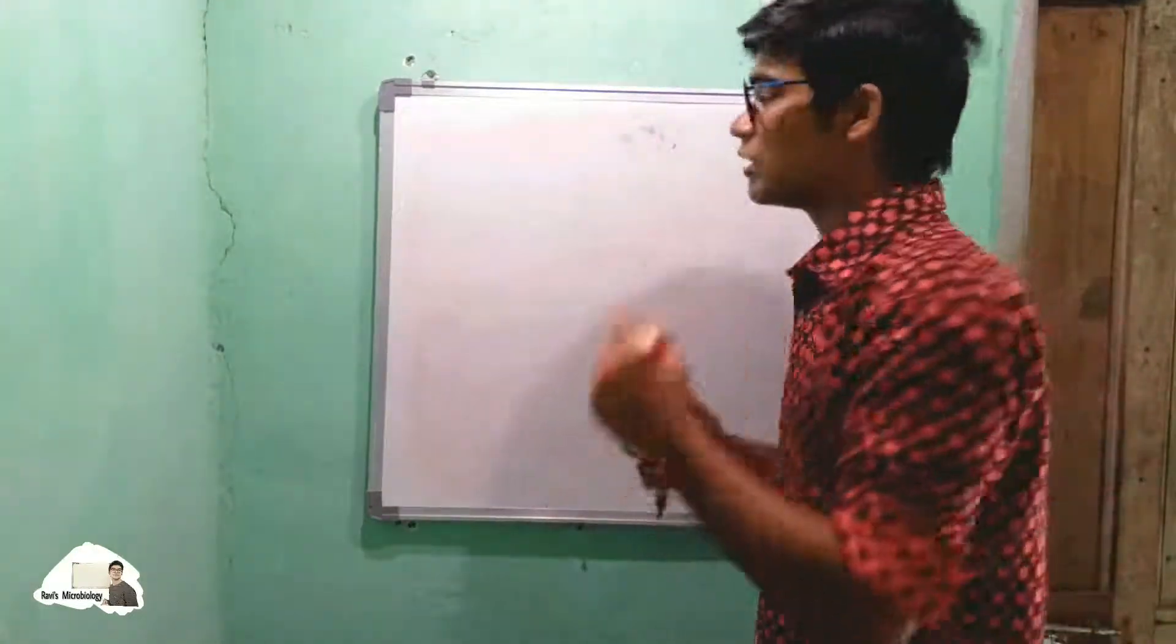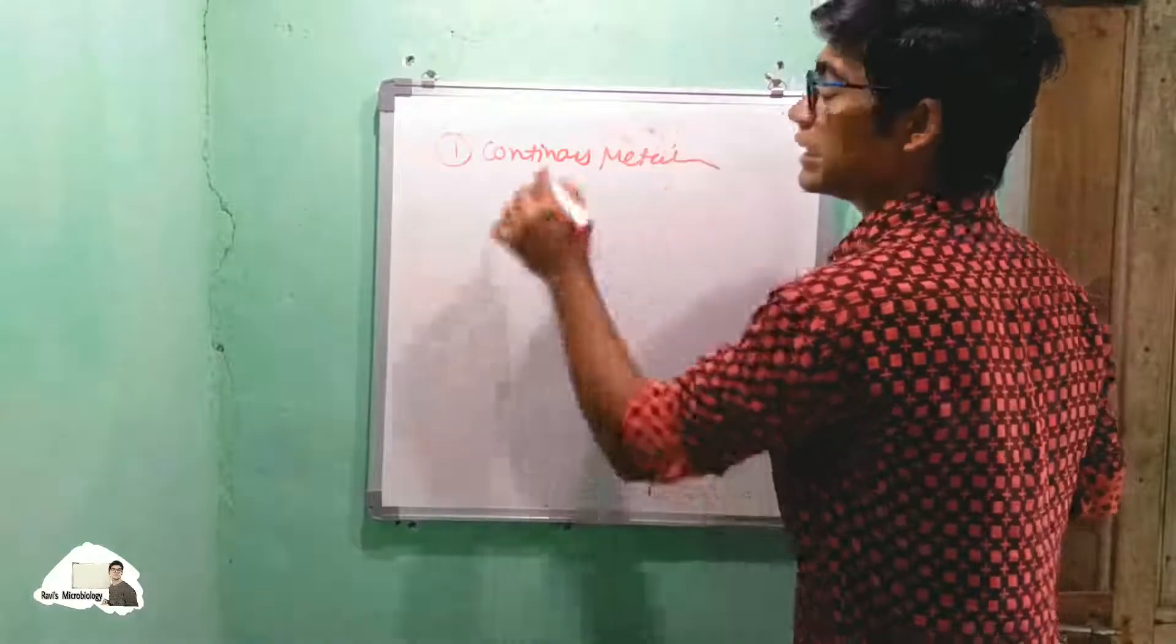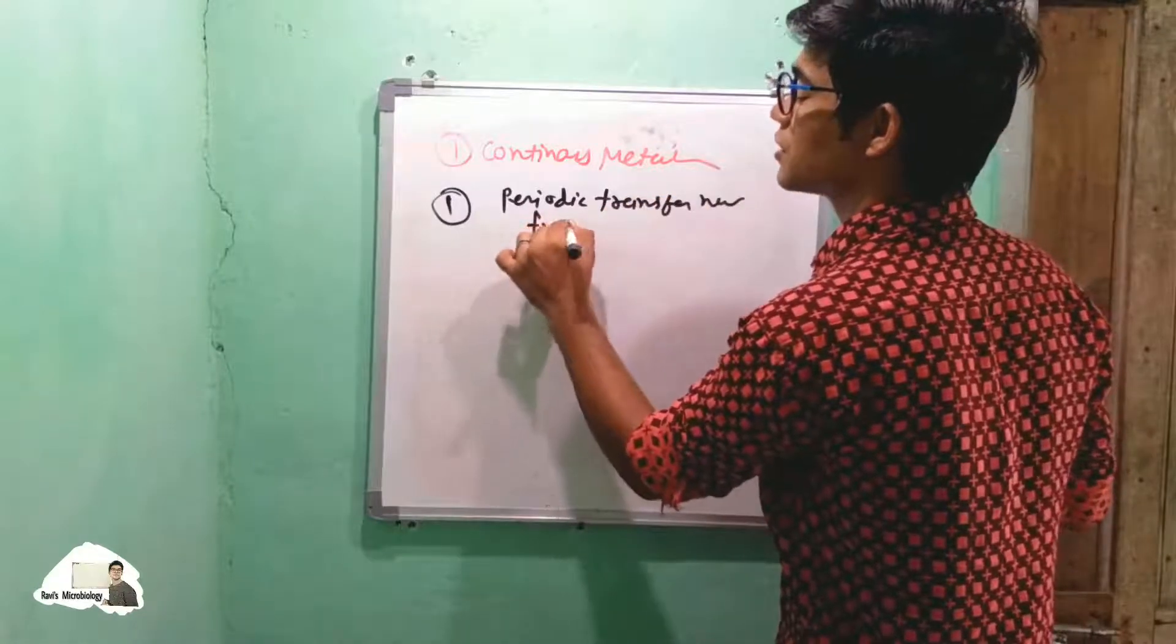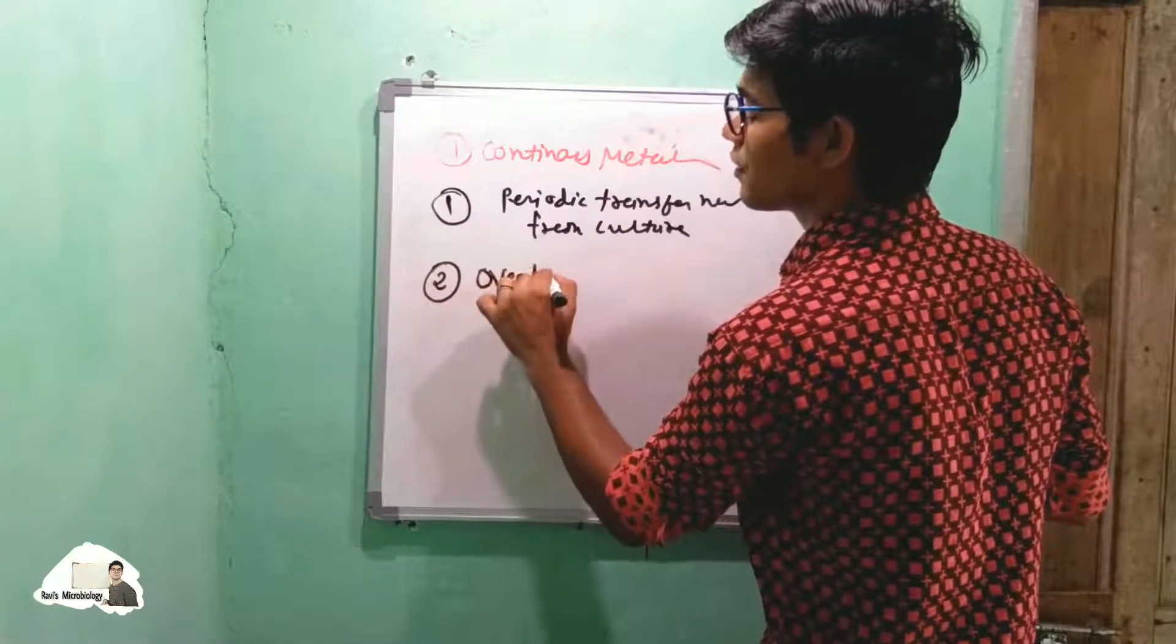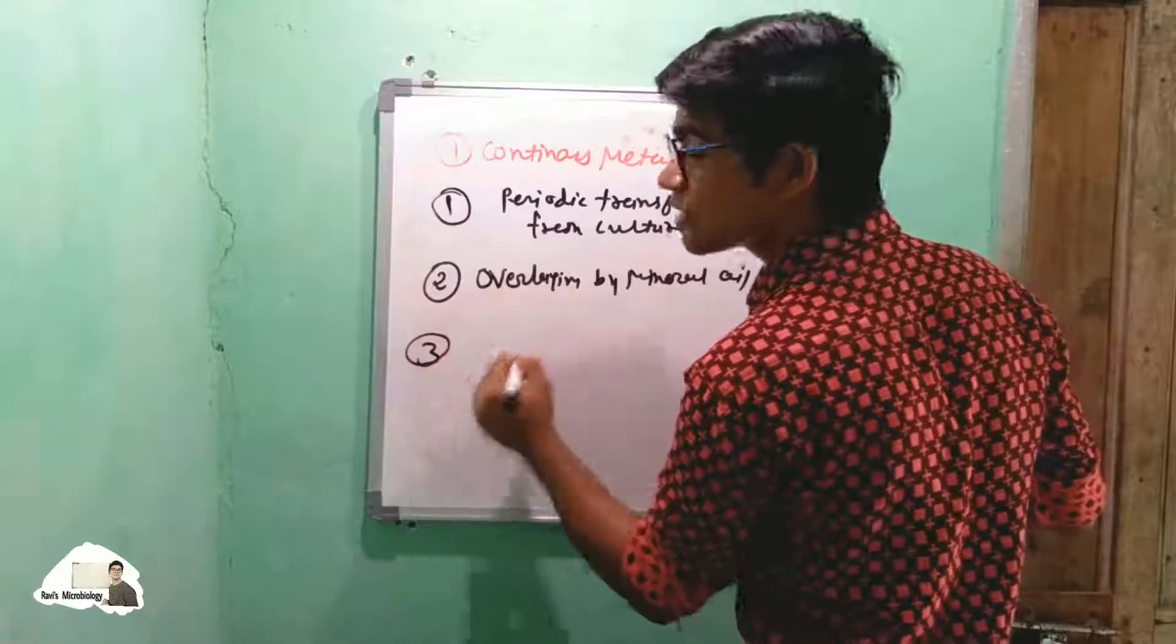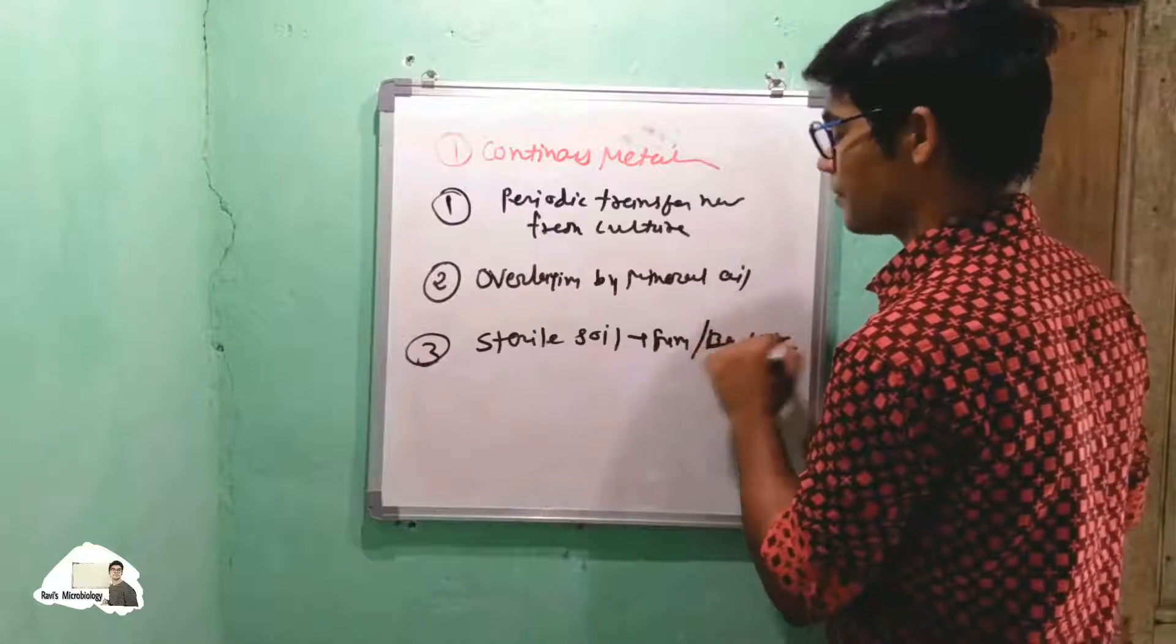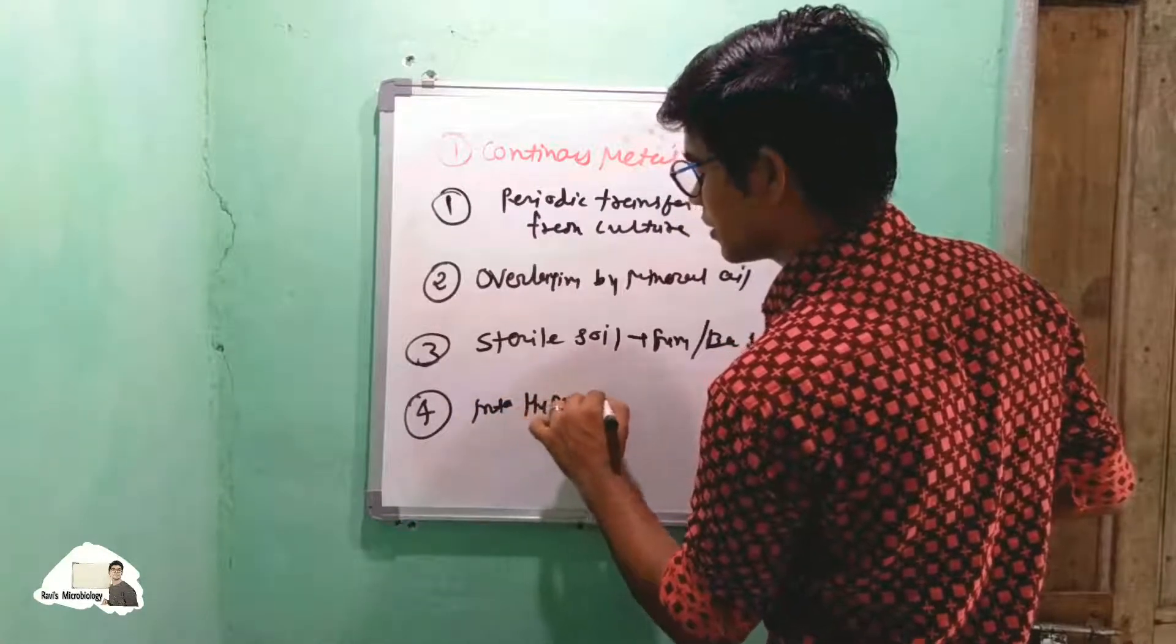We are going to talk about these one by one. First, continuous metabolism includes four types of methods: first is periodic transfer into new fresh culture; second is overlaying by mineral oil; third is preservation in sterile soil, which is only used for fungi and bacterial spores; the fourth method is in hypertonic solution.